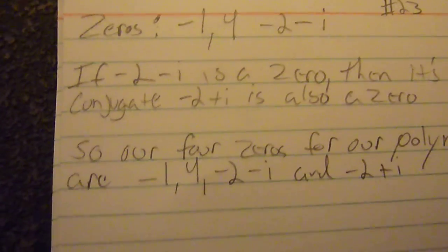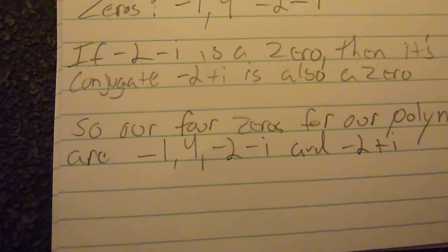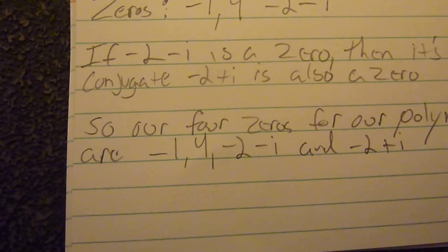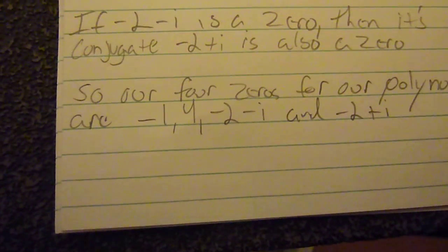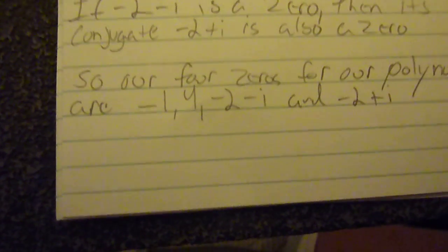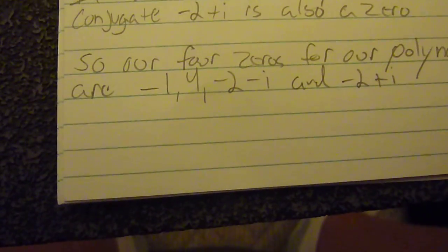With that information, you can say that if negative 2 minus i is a zero, then its conjugate negative 2 plus i is also a zero. So our four zeros for our polynomial are negative 1, 4, negative 2 minus i, and negative 2 plus i.